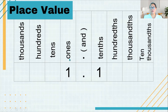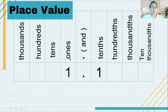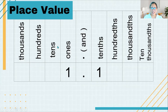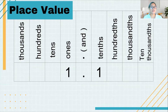So basically, when we talk about whole numbers, we know that the first number represents ones. If we have two numbers, it represents tens. And then we also have hundreds and then thousands. These are the different place values that we learned during our lower primary class.